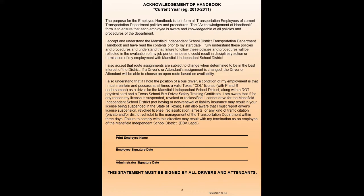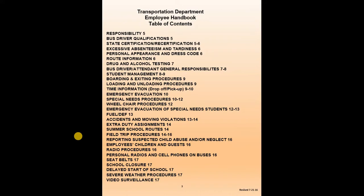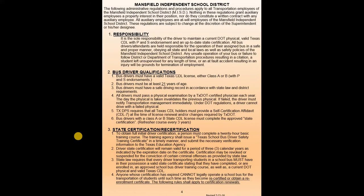This is the acknowledgement of the handbook that you should have already signed. The year will change every year because sometimes we make certain minor adjustments and updates. For the most part it stays the same, but we will be asking you, if you haven't already, to sign this acknowledging that you have received it. This is the table of contents for the transportation handbook, and I want you to be familiar with the entire handbook. It is also online on the transportation department website — go to MISD.com, look under departments, click on the transportation tab, and you will find the employee handbook, which will be updated every single year.